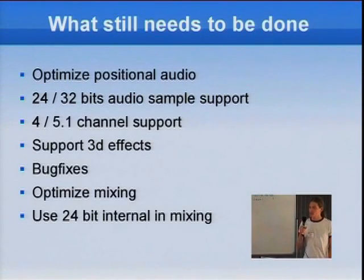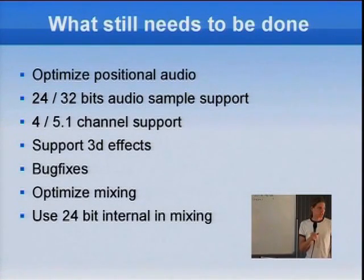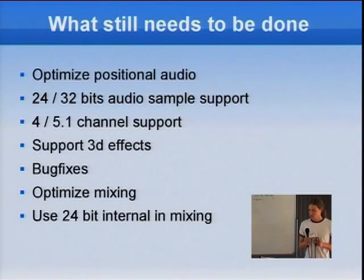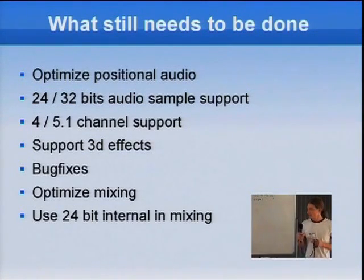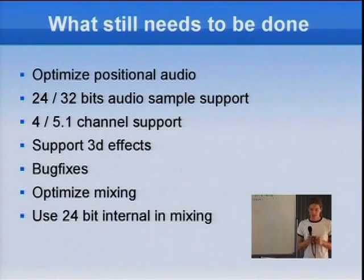I also need to optimize mixing some more, because right now it clamps every operation. Basically you have a 16-bit format, and the secondary is 16-bit as well, so when it puts data in and adds it to the primary buffer, it needs to be sure it doesn't overflow. Right now it does a check every time it adds something, but it would be better to use a bigger buffer, put all the data in there including the primary, and then check for clamping.